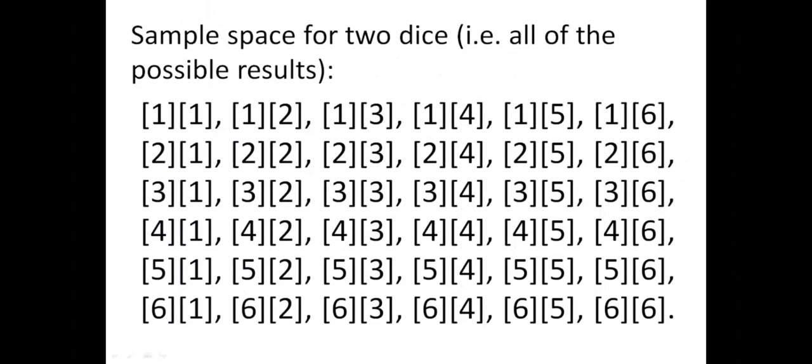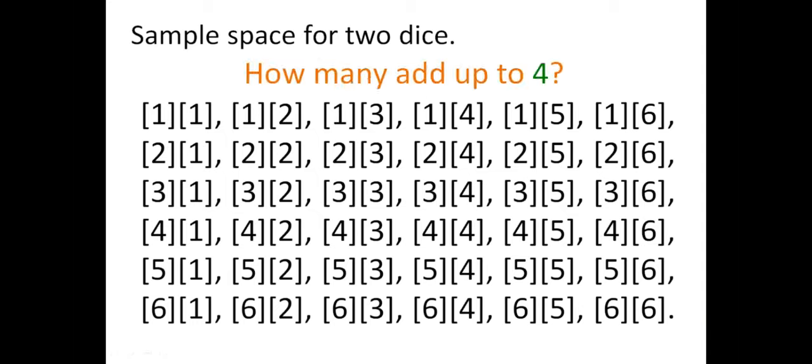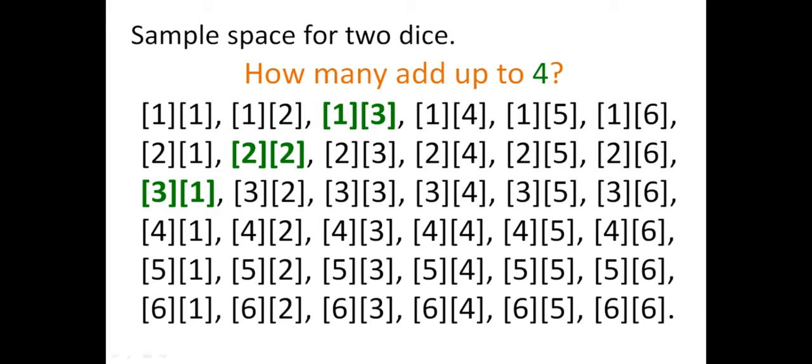Okay. This matrix shows all the possible permutations or outcomes from rolling two dice. We have 36 pairs of numbers where each number within the square brackets represents the number shown by a dice. So, let's try to identify the different ways in which we could obtain a result of 4. Feel free to pause the video and try to find them. And we have three possible ways in which we could obtain an outcome of 4, highlighted here in green.